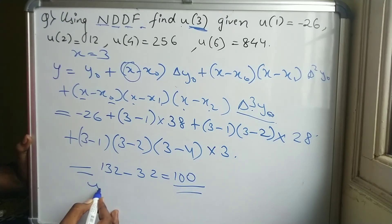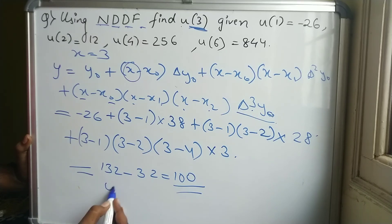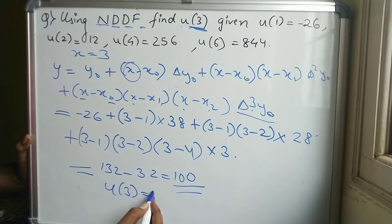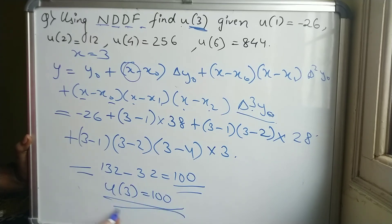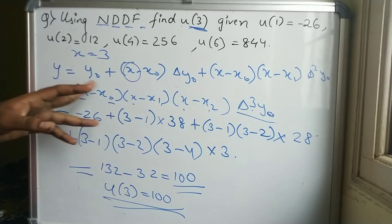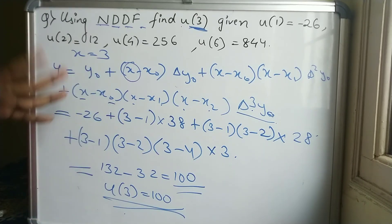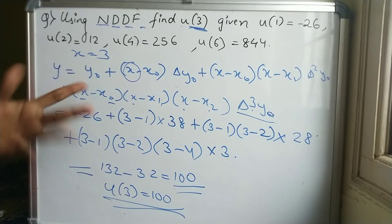So we have successfully found u(3) by substituting the values into Newton's Divided Difference Formula and simplifying the expression.